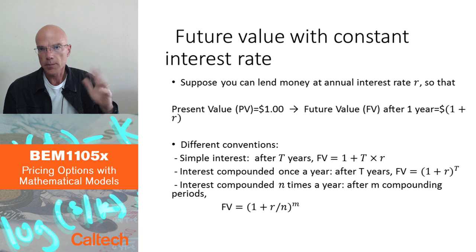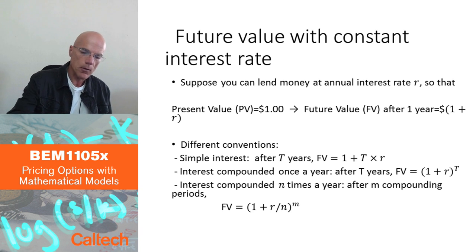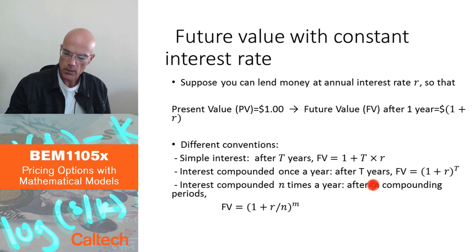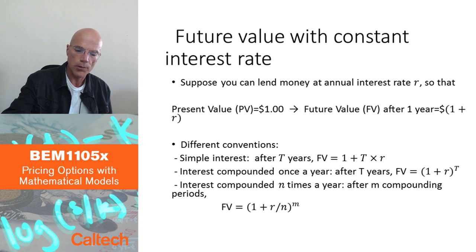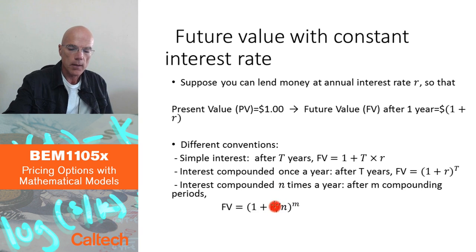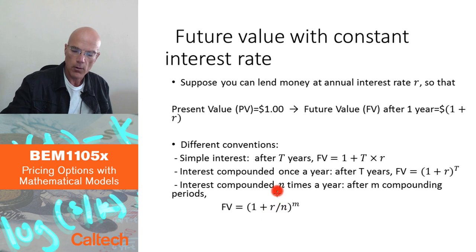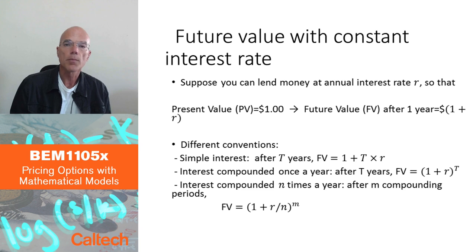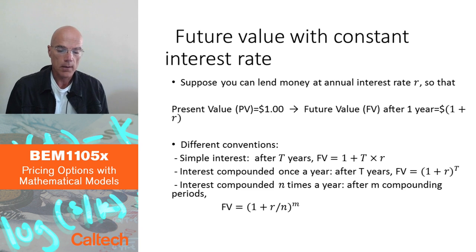In practice, banks typically compound more frequently than once a year — say quarterly. In general, if interest is compounded n times a year and we look at the future value after m compounding periods, the formula for how much one dollar is worth is (1 + r/n)^m. Here r is the annualized nominal interest rate, divided by the compounding frequency n, raised to the power of the number of periods m.